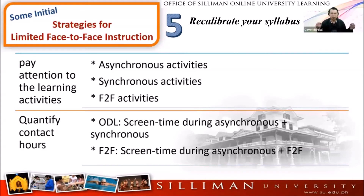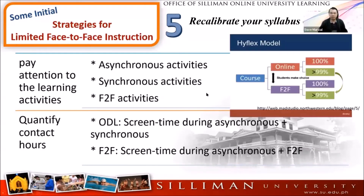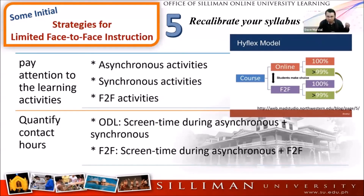What is bi-chronous? It is asynchronous within synchronous, or the other way around — asynchronous activities that have real-time activities embedded in them, or synchronous activities inside asynchronous activities. You have to quantify and qualify also the different activities. So you have two groups of students here: the online students and the students who can do face-to-face.